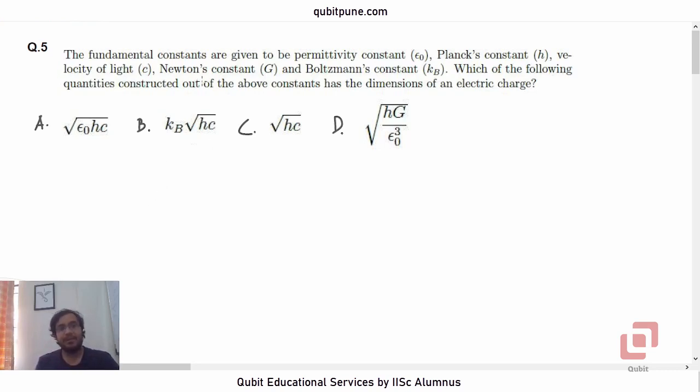The problem is the fundamental constants are given to be permittivity constant epsilon not, Planck's constant h, velocity of light c, Newton's constant G, and Boltzmann's constant KB. Which of the following quantities constructed out of the above constants has the dimensions of an electric charge?